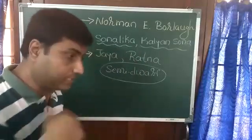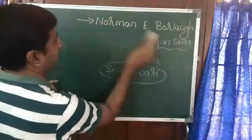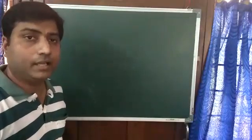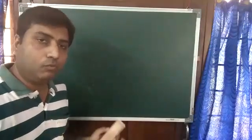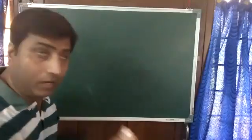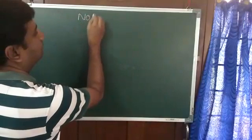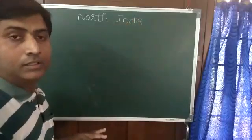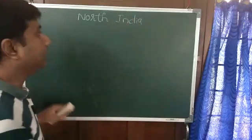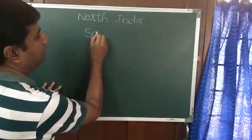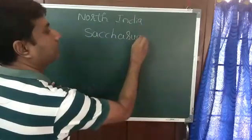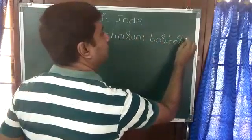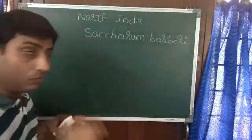Let me give you one more excellent example. In India, one of the important crops is sugarcane. In North India, the sugarcane that was being produced had the scientific name Saccharum barberi.